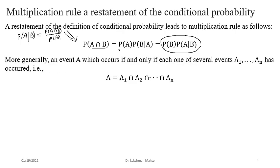How can we generalize this? Suppose we have an event A that happens through a sequence of events — it can be broken into a sequence, meaning A occurs if and only if all of several sub-events occur jointly. So A represents the joint occurrence of n events. How can we find P(A)? We need to generalize the multiplication rule to n events. Here it is for the two-event case; anyone can come up with the idea of how to generalize it.